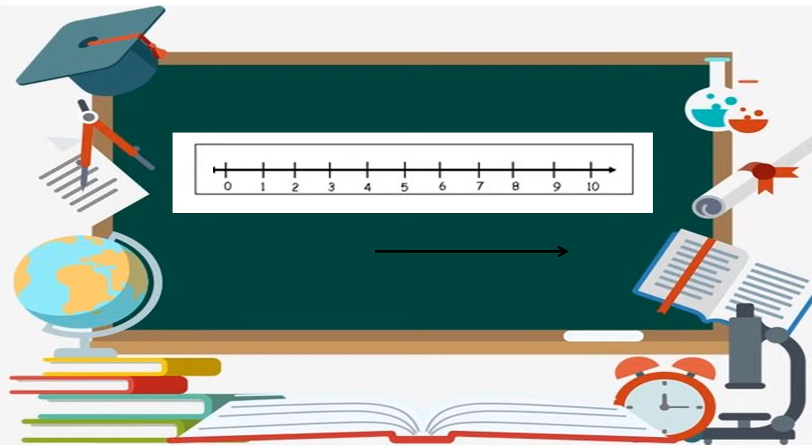The value of numbers on the number line keeps increasing to the right side. There is no largest whole number — we can keep numbers going infinitely to the right, increasing through hundreds, thousands, millions and billions. If we have a number line from 0 to 10, then 10 is the largest value shown, but zero is the smallest whole number and has the least value among whole numbers.